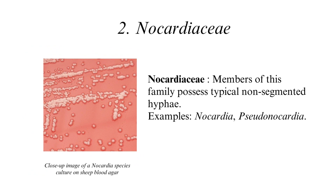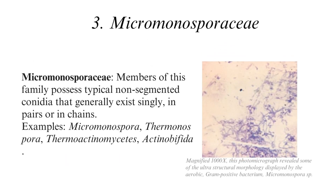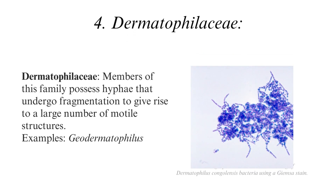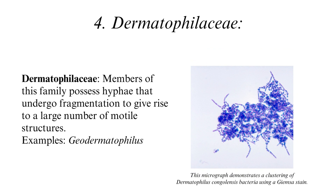Nocardiaceae: members possess typical non-segmented hyphae; examples are Nocardia and Pseudonocardia. Micromonosporaceae: members possess typical non-segmented conidia that generally exist singly, in pairs, or in chains; examples are Micromonospora, Thermonospora, Thermoactinomyces, and Actinobifida. Dermatophilaceae: members possess hyphae that undergo fragmentation to give rise to a large number of motile structures; example is Geodermatophilus.